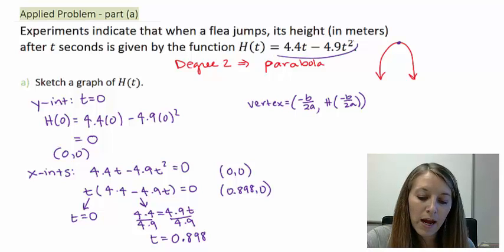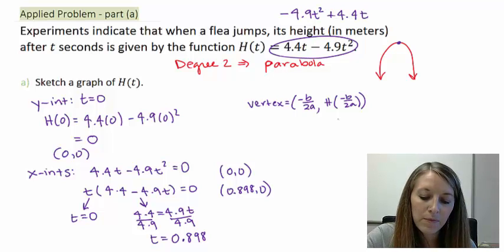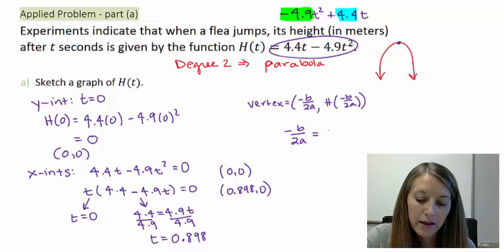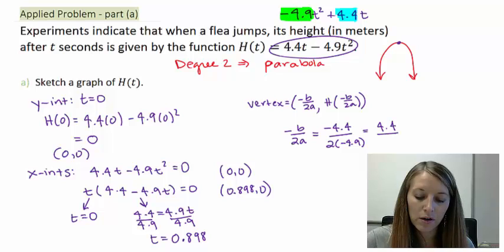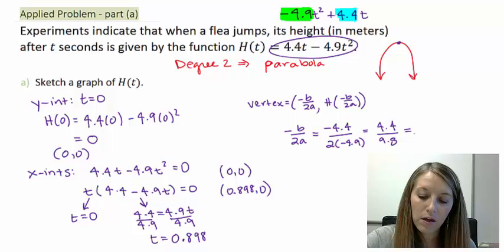So, if I were to write this in descending order, negative 4.9t squared plus 4.4t, I figure out that my b is this 4.4, and I figure out my a is this negative 4.9. So, my first coordinate, negative b over 2a, gives me negative 4.4 over 2 times negative 4.9. Now, my negatives cancel out, so I get positive 4.4 over 9.8. And if I simplify that, that is approximately 0.449.